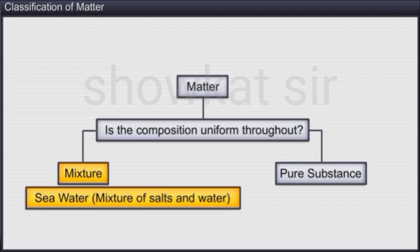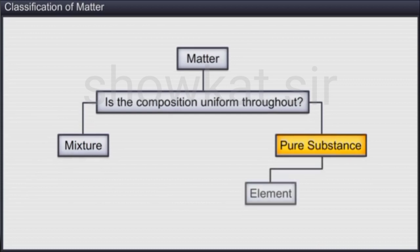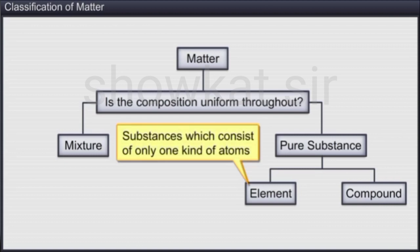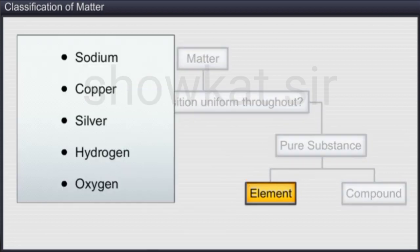Now let's look at the types of pure substances. A pure substance can be an element or a compound. An element is a pure substance made up of only one kind of atoms. We have 118 elements, such as sodium, copper, and silver, which are metals, and hydrogen and oxygen, which are non-metals and gases.